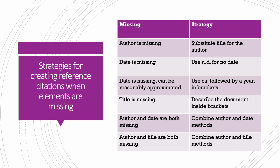But what should you do if you do not have all the information? Here are some strategies for creating reference citations when elements are missing. If the author is missing, substitute the title for the author. If the date is missing, use 'n.d.' for no date. If the date is missing but can be reasonably approximated, use 'ca.' followed by a year in brackets. If the title is missing, describe the document inside brackets. If both author and date are missing, combine those methods. If both author and title are missing, combine those methods.